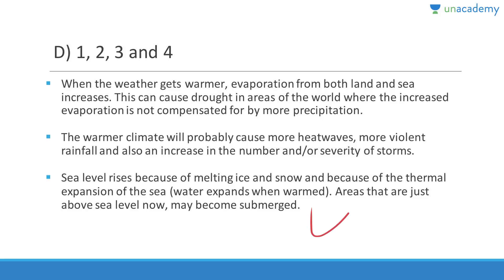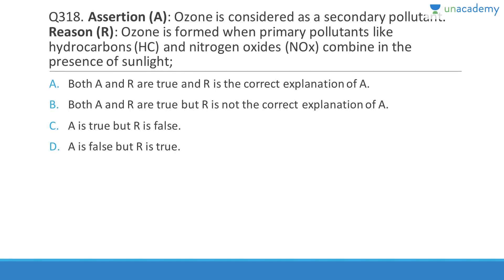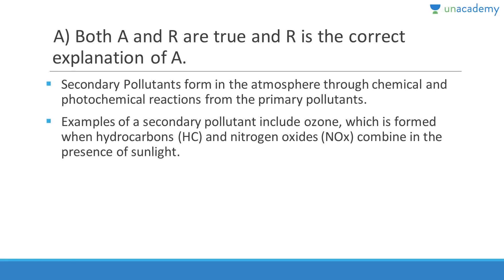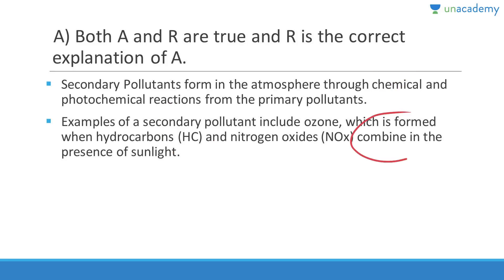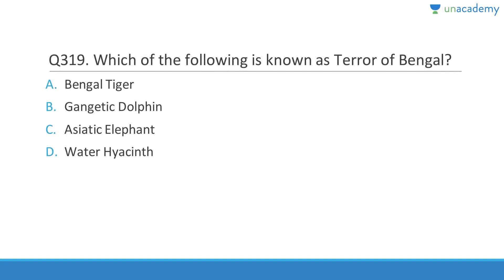Question 318: Ozone is considered a secondary pollutant because it is not directly produced — it forms when primary pollutants like hydrocarbons and nitrogen oxides combine in the presence of sunlight. The assertion is true and the reason is the correct explanation. Secondary pollutants form in the atmosphere through chemical and photochemical reactions from primary pollutants.